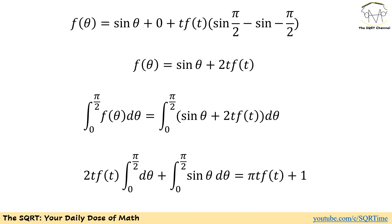Let's substitute f(θ): we are going to have sine(θ) plus 2·t·f(t), then integrate with respect to θ. The integral of sine(θ) dθ between 0 and π/2 equals 1. For the term 2·t·f(t) dθ, the integral gives θ evaluated between 0 and π/2, which equals π/2. Multiplying by 2, the full expression becomes π·t·f(t) plus 1, and that is our final answer.